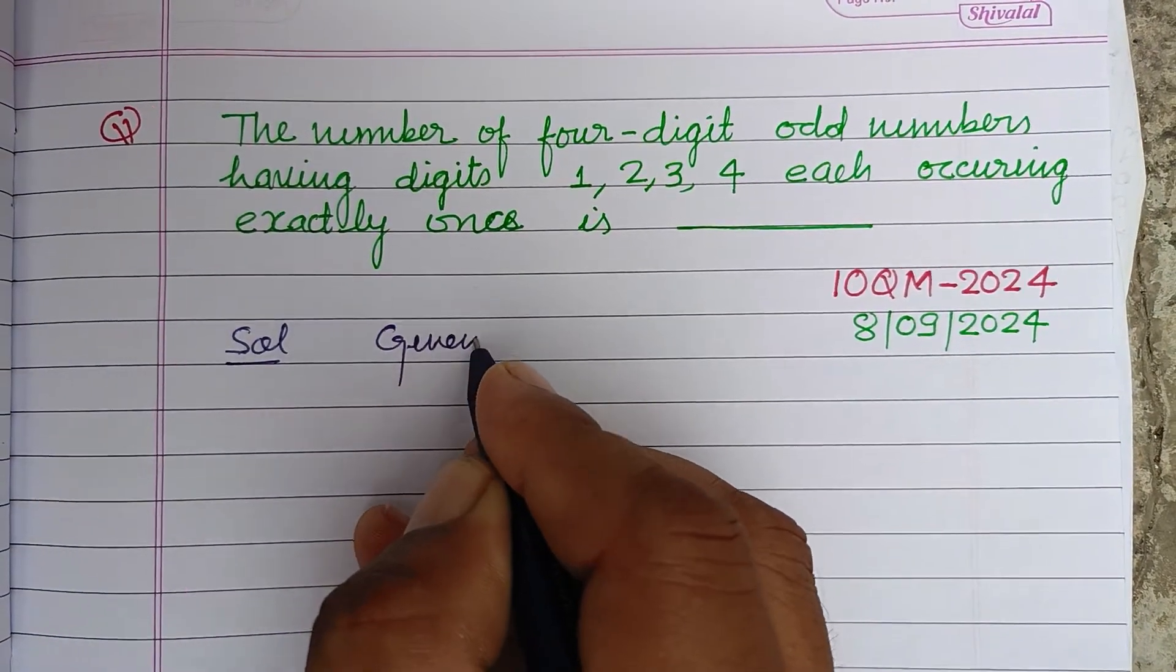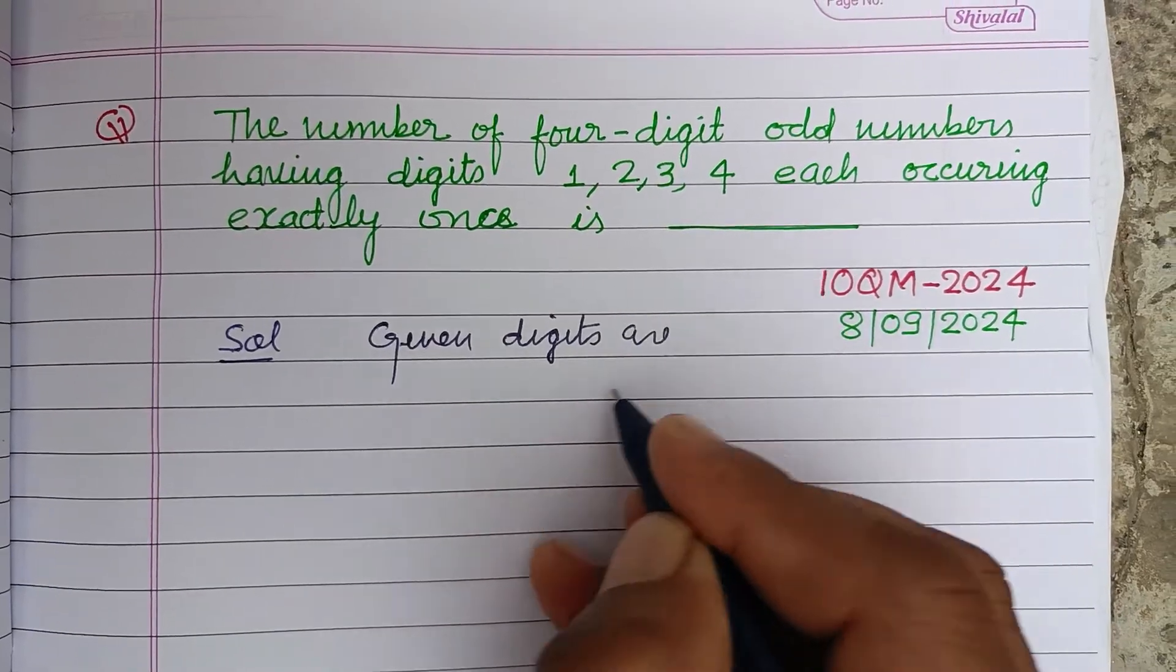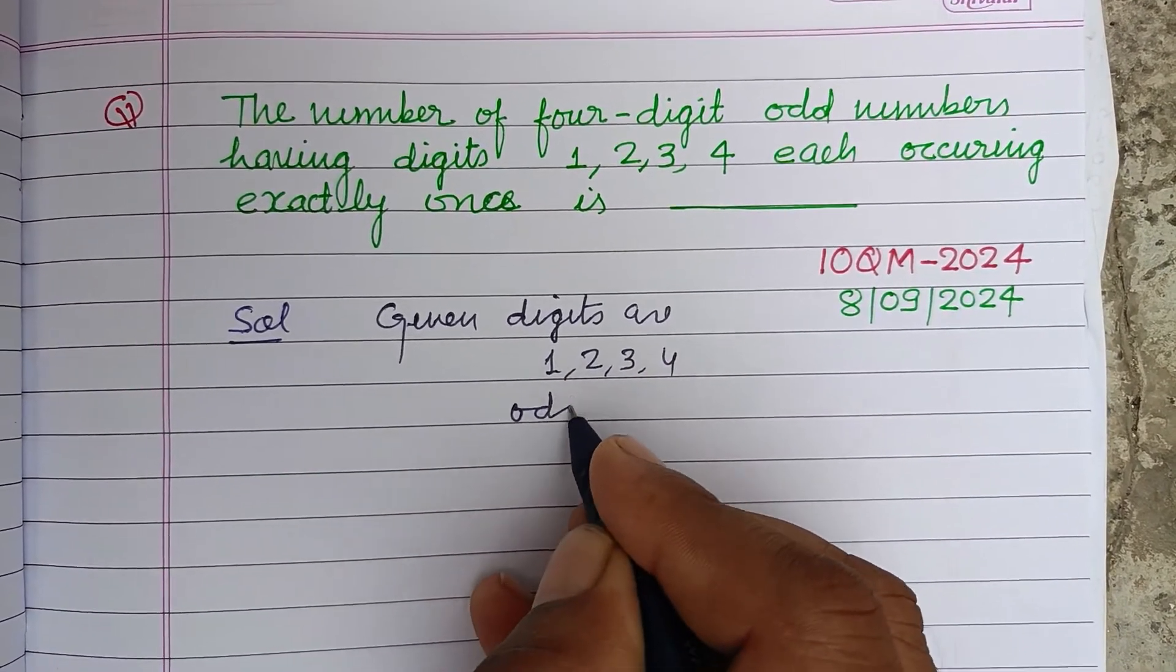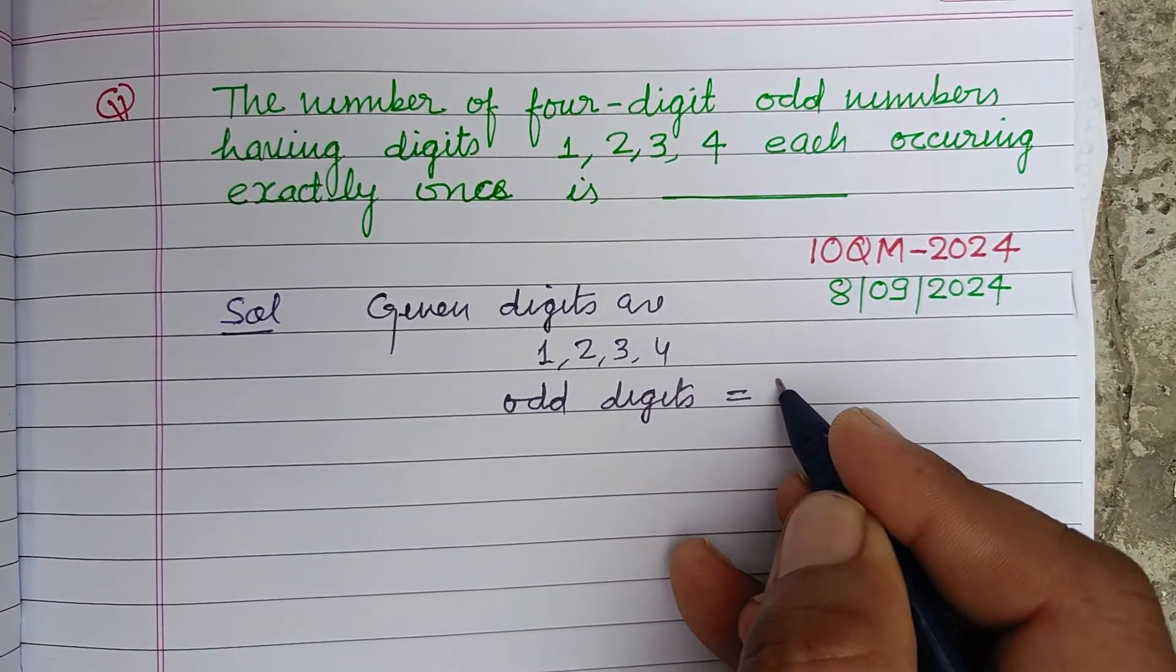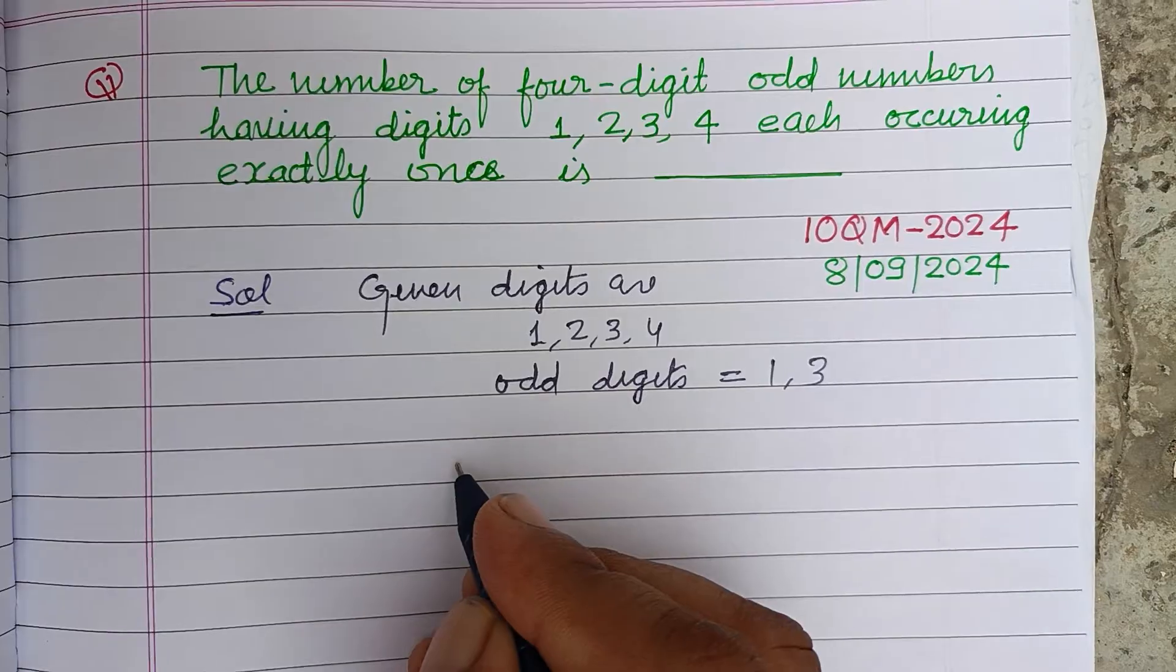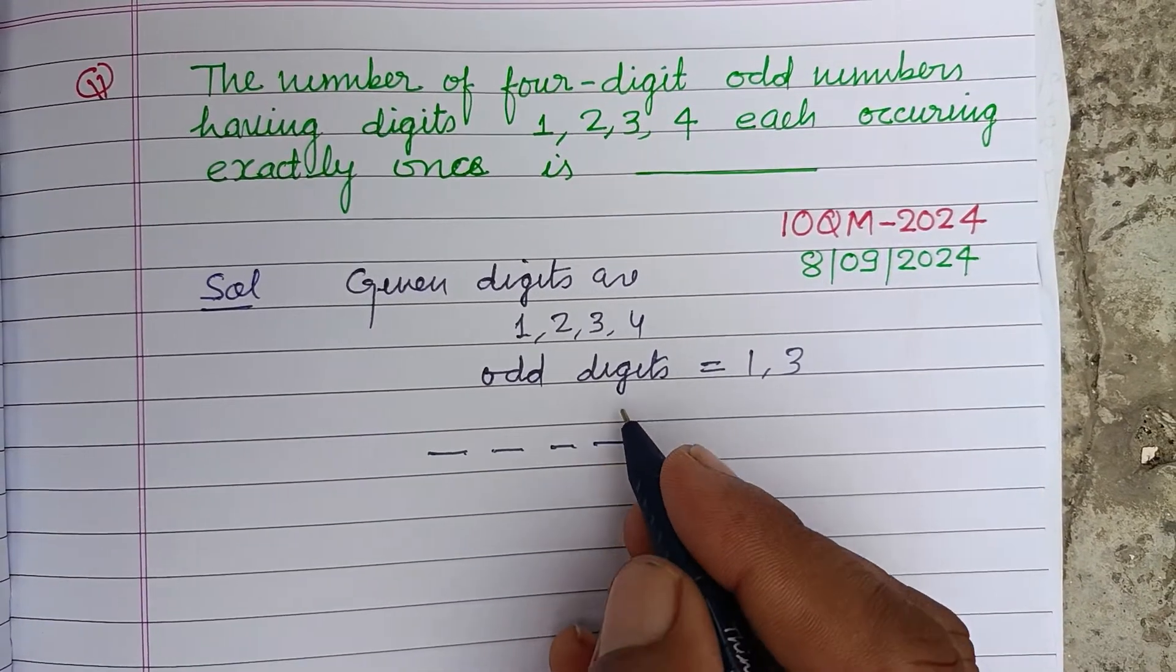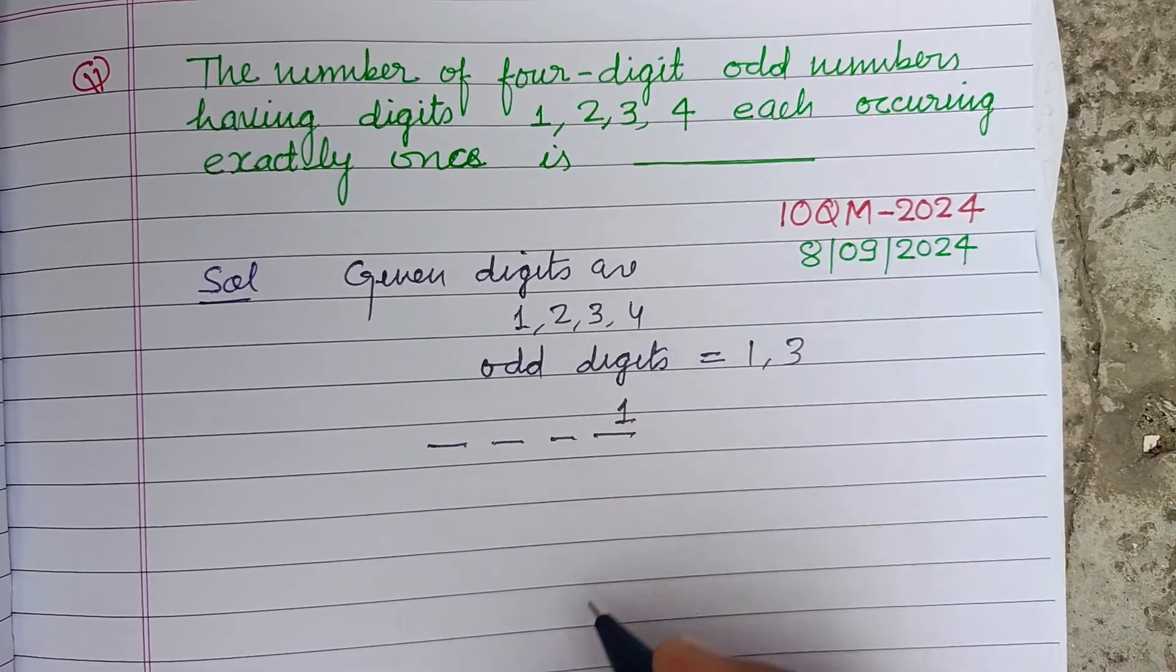So students, the given digits are 1, 2, 3, 4. The odd digits are 1 and 3. We want to form a four-digit odd number, so we put 1 and 3 at the unit place.